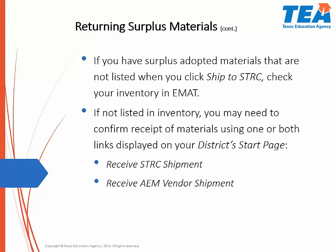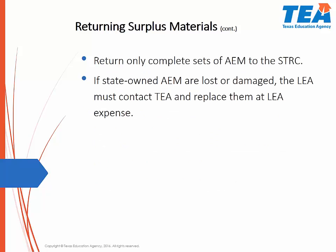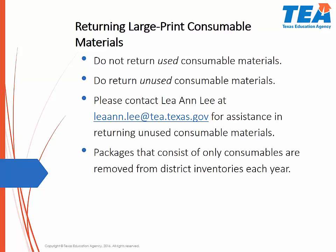If you have surplus adopted materials that are not listed when you click Ship to STRC, please check your inventory in EMAT. If any materials are not listed in your inventory, you may need to confirm receipt of the materials by using the Receive STRC Shipment link, the Receive AEM Vendor Shipment link, or both. Please return only complete sets of AEM to the STRC. If state-owned accessible materials are lost or damaged, the district must contact TEA and replace them at district expense. Please do not return used consumable materials. Do return unused consumable materials. You may contact Lee Ann Lee at TEA for assistance in returning the unused consumable materials. Packages that consist of only consumables are removed from district inventories each year.